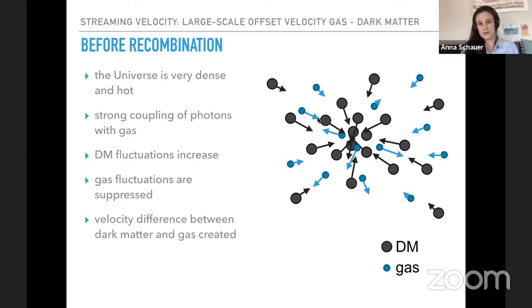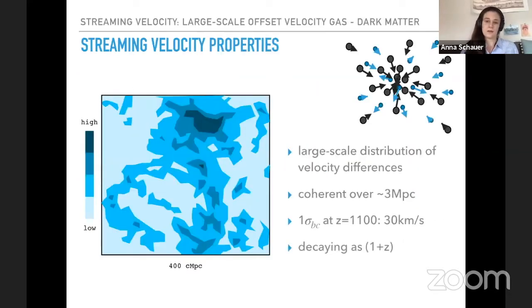You can see that some of the regions of the universe have a large velocity offset. For example, here in the region I'm pointing out with my mouse here next to the center. Whereas in other regions over here, we don't have a really big velocity offset and the gas and the dark matter are moving uniformly. At recombination, it's 30 kilometers per second. Then as the universe expands, the velocity gets smaller. So a typical first star formation redshift of 20, it's about half a kilometer per second as it is decaying.